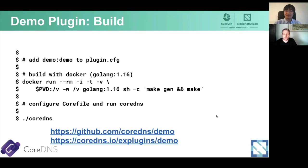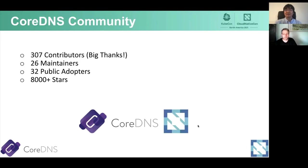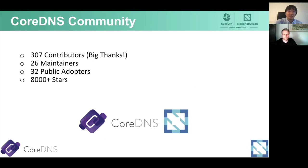I want to hand back to Yangtang, who's going to talk about the CoreDNS community. Thanks, Mick. As of now, we have 307 contributors — big thanks to everyone who contributed to the CoreDNS repo. We also have 26 maintainers and this number is increasing. I'll discuss how to become a maintainer shortly. We have 32 public adopters so far, and we also have 8,000 stars, which is a big achievement.